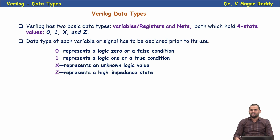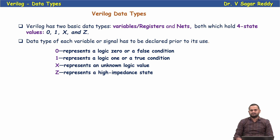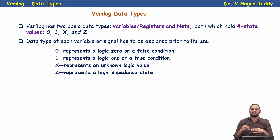0 represents logic 0 or false condition, 1 represents logic 1 or true condition, x represents an unknown logic value, and z represents a high impedance state. In real time we don't have x and z, but we need them in Verilog simulation. For example, a flip-flop due to setup and hold time violation may enter metastability, making the output unpredictable — we represent that as x. Similarly, z represents a pin not connected to either 0 or 1, i.e., high impedance.